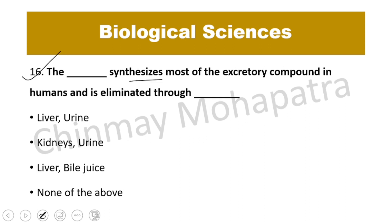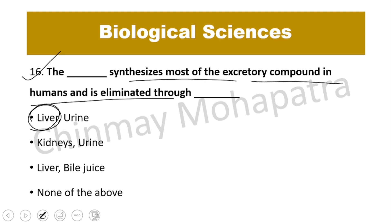Question number 16: Most of the excretory compounds in humans are synthesized by the liver and eliminated through urine.